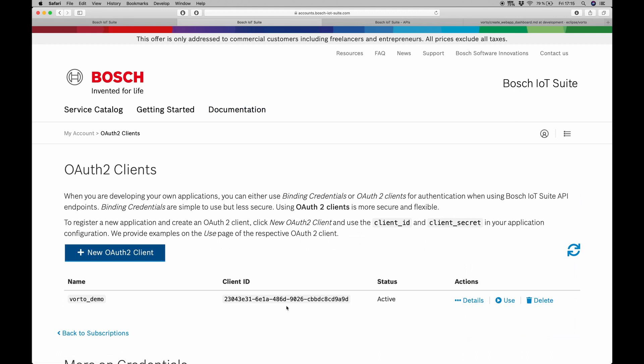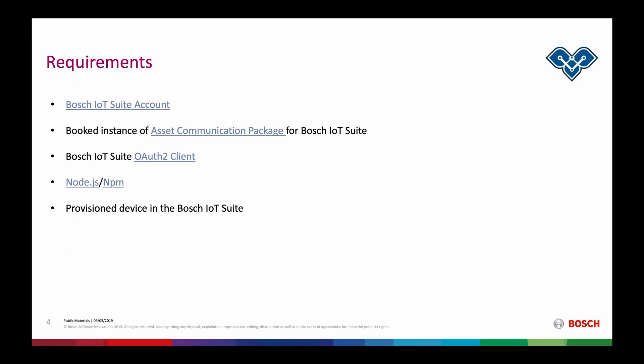We will look into how we use this client in combination with the Voto dashboard in a second. If we check back with our requirements, of course we also have to have Node.js and NPM installed, since the dashboard is built with those technologies. We can use it to download and install the dashboard on our system. The last thing we have to have in place is a provisioned device in the Bosch IoT Suite.